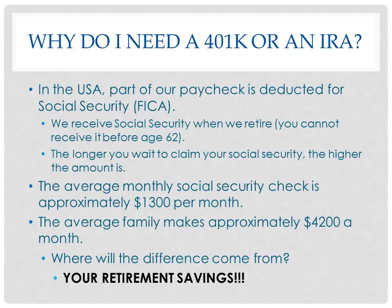Why do you need a 401k or an IRA? In the U.S., part of our paycheck is deducted for Social Security — that's the FICA deduction. We receive Social Security when we retire, usually beginning around age 62, but the longer you wait to claim it, the higher the amount. The average monthly Social Security check right now is about $1,300 per month, but the average family makes approximately $4,200 a month — after taxes about $3,000. That gap from $3,000 down to $1,300 is why you need retirement savings, to ensure you're not living in a cardboard box eating cat food.